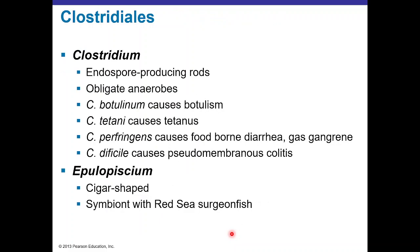Clostridium are endospore-producing obligate anaerobic rods with four important pathogens. Clostridium botulinum causes botulism or flaccid paralysis, typically acquired by ingesting endospores in raw honey. Clostridium tetani contaminates soil — when a wound is contaminated with endospores, they germinate into vegetative form, releasing a toxin affecting the nervous system and causing spastic paralysis known as tetanus. Clostridium perfringens causes foodborne diarrhea or gas gangrene. Clostridium difficile causes pseudomembranous colitis after antibiotic treatment.